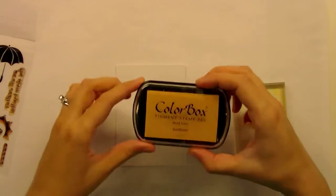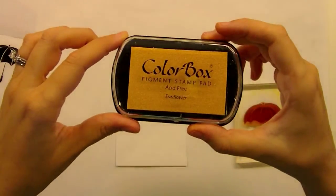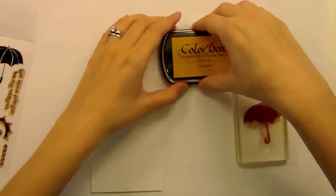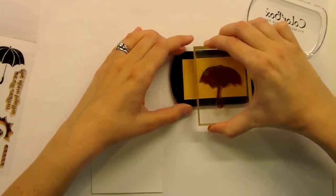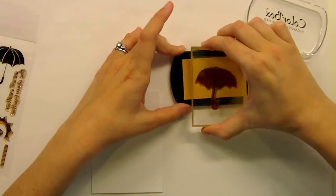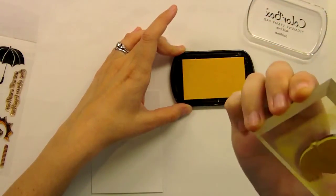I'm getting out some Color Box Pigment ink, a sunflower color. This ink pad is really old, I think three years old or something. So you're going to see me stamping it kind of furiously because it's really dry. But the color is so pretty I couldn't help but use it.